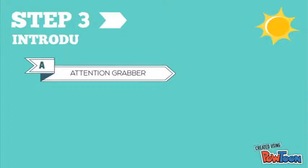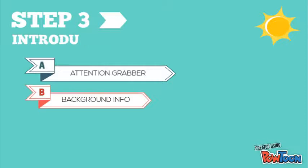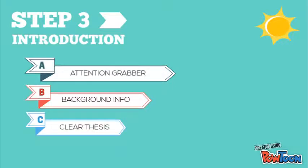The attention grabber I might use for our essay on never giving up could be something along the lines of Yoda's quote: 'Do or do not, there is no try.' This automatically gets the reader interested in our essay. Next comes the background information — a sentence used to bridge our train of thought from our attention grabber to our thesis and explain why the attention grabber connects back to our thesis. Then finally, all you have to do is plug in your thesis statement and you have your introduction.